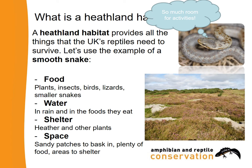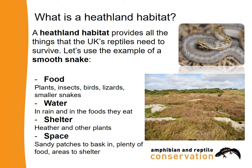We know from previous lessons that basking or sunbathing is something reptiles do to get their energy to move. There are areas where they can bask and areas where they can move to shade, and there's lots of space where their food lives. So a heathland habitat provides the food, the water, the shelter and the space for a smooth snake — and not just smooth snakes. All six reptiles can live in heathlands, so heathlands are a perfect habitat for all six of our reptile species.